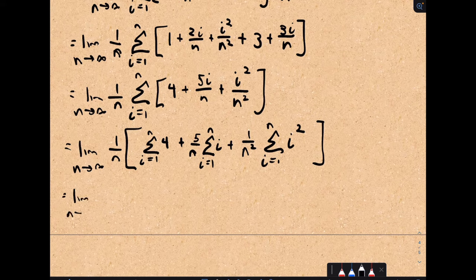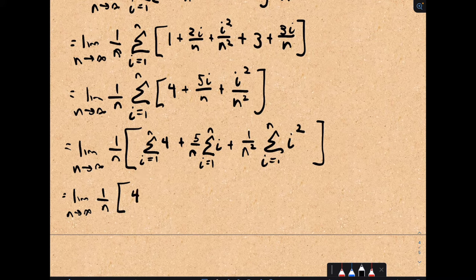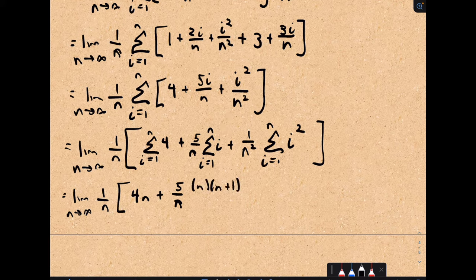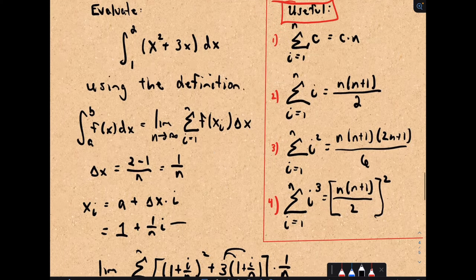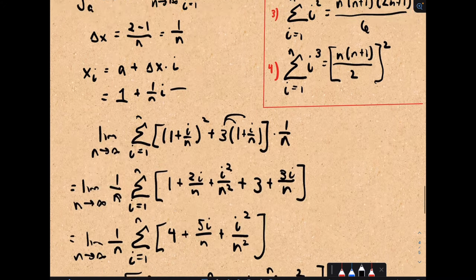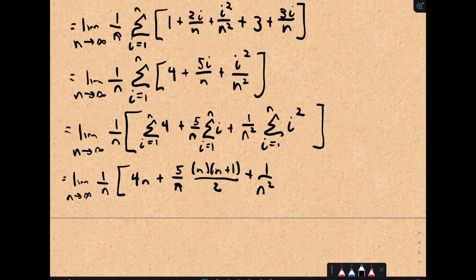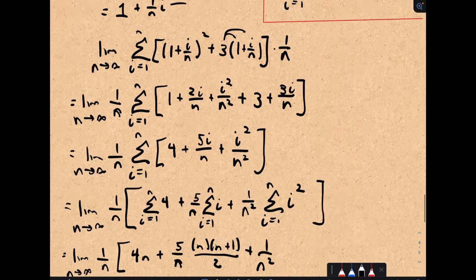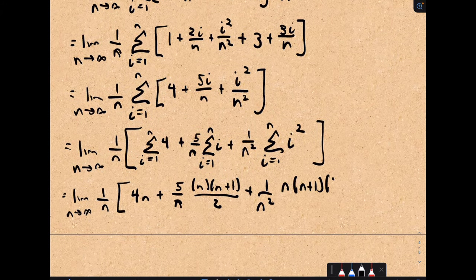Now we use the summation formulas. The limit as n goes to infinity of 1 over n: summing 4 from 1 to n gives 4n. Summing i from 1 to n gives n times (n plus 1) over 2 — that's the formula. And summing i squared from 1 to n gives n times (n plus 1) times (2n plus 1) over 6. Notice the summations are gone now — we're just down to a limit problem.